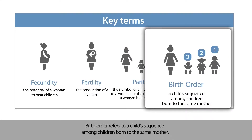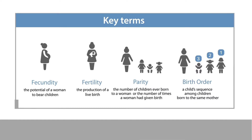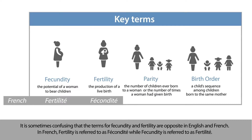Birth order refers to a child's sequence among children born to the same mother. It is sometimes confusing that the terms for fecundity and fertility are opposite in English and French. In French, fertility is referred to as fecundité, while fecundity is referred to as fertilité.